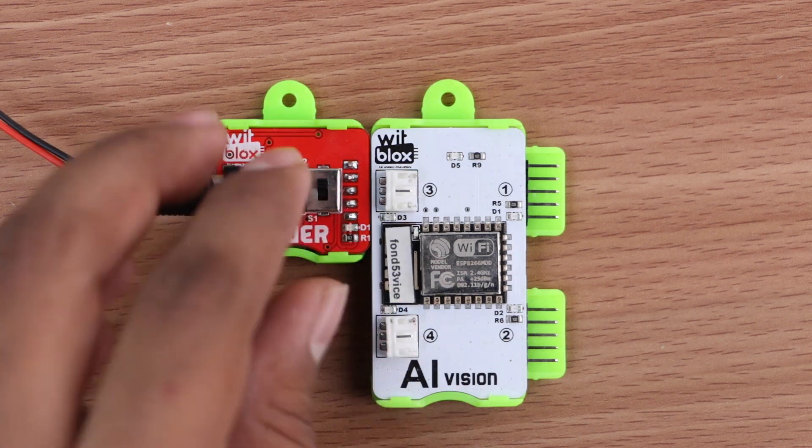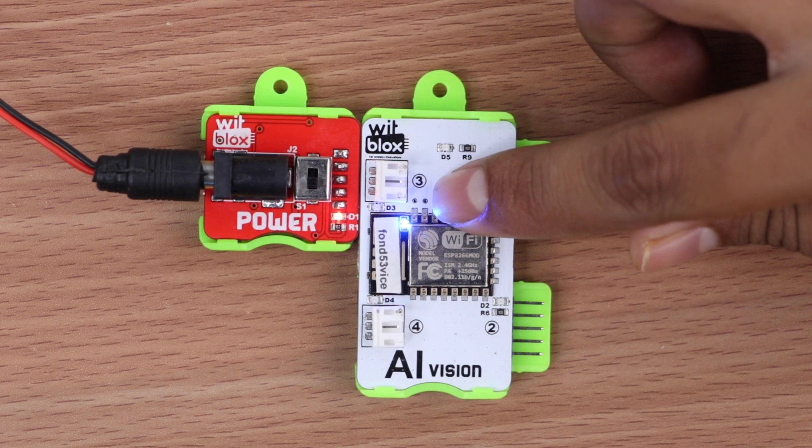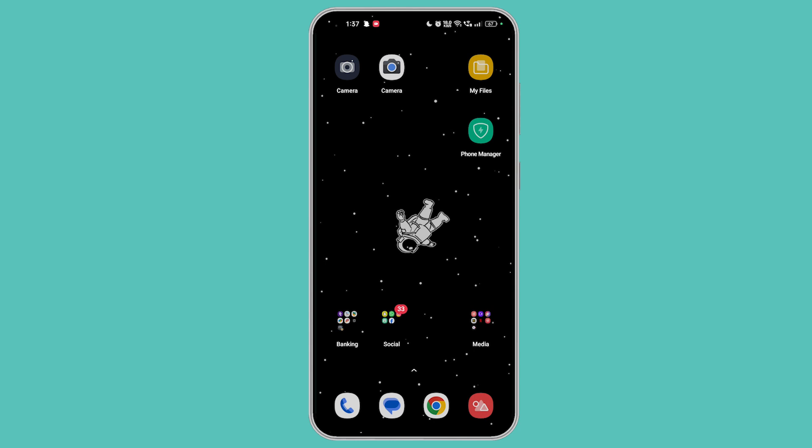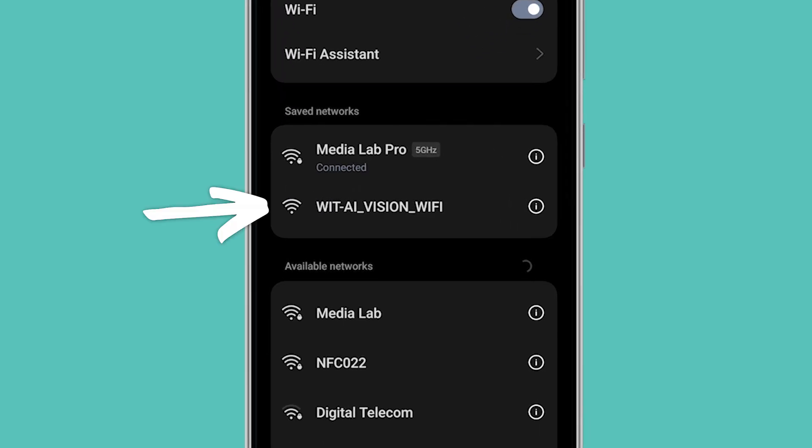Turn on the power blocks. When AI Vision receives power, it will create its own Wi-Fi network. This will be indicated with a blue light on the AI blocks. Now go to your phone's Wi-Fi settings and connect the phone to the WIT AI Vision Wi-Fi network.